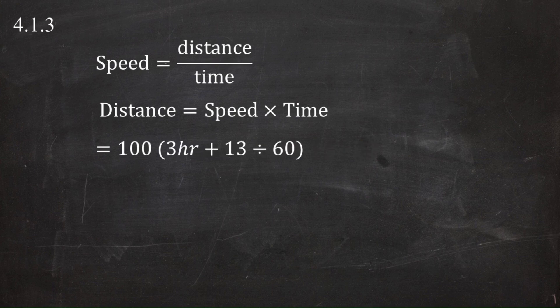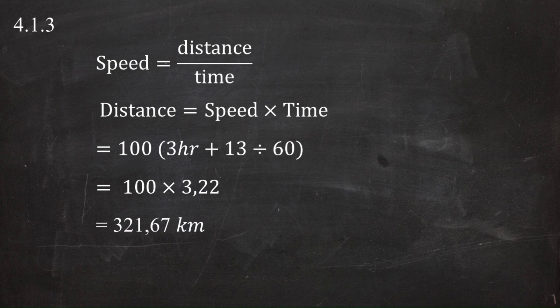Substituting into the distance equation: distance equals 100 km/h multiplied by (3 + 13/60) hours. Simplifying the bracket gives 100 km/h multiplied by 3.22 hours, which equals 321.67 kilometers. Rounding to the nearest kilometer gives a distance from the airport to the Glen Renan campsite of 322 kilometers.